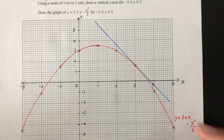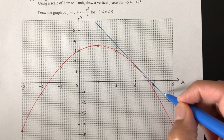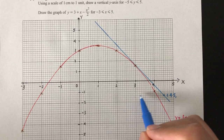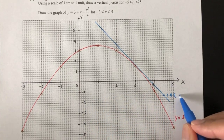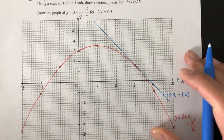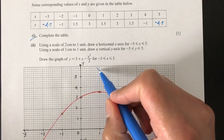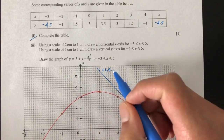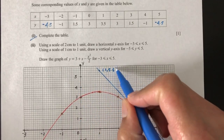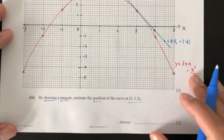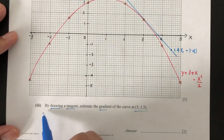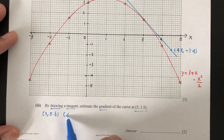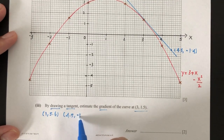You can choose any point on the tangent that you want. I will choose the point (4.5, minus 1.4) on one side, and on the other side I will choose the point (1, 5.6). So now I have two points: (1, 5.6) and (4.5, minus 1.4).